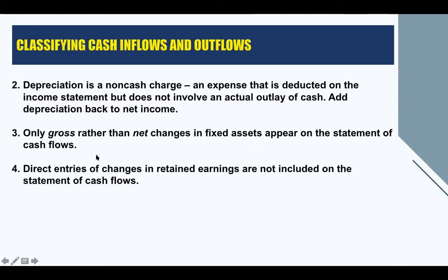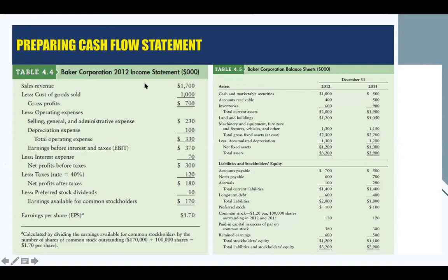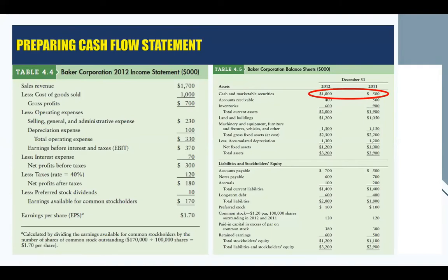Number four: direct entries of changes in retained earnings are not included on the statement of cash flows. To better understand how to prepare a cash flow statement, let's have an example. This is Baker Corporation's financial statements — the income statement and balance sheet — from the book Principles of Managerial Finance by Lawrence Gitman. There are two financial statements we need: the income statement and the balance sheet. The purpose of the cash flow statement is to reconcile the change in cash on the balance sheet and the net income reported on the income statement.